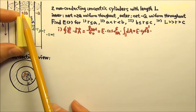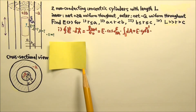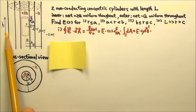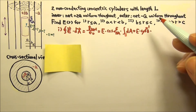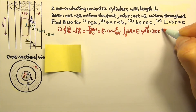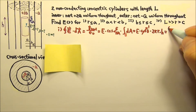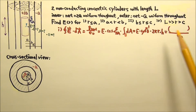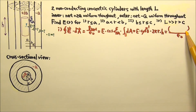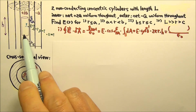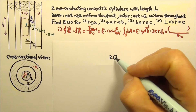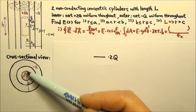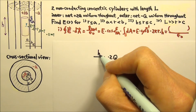So we have E times cosine 0° (which is 1) times the area of the curved part of the Gaussian surface. If we cut the curved part open, we get a rectangle with base equal to the circumference 2πr and height h, giving an area of 2πrh. This equals Q_enclosed over ε₀. The enclosed charge calculation is usually the hardest part — only a fraction of the 2q is inside the Gaussian surface. The Gaussian surface has length h while 2q is spread over length L, so the length fraction is h/L.